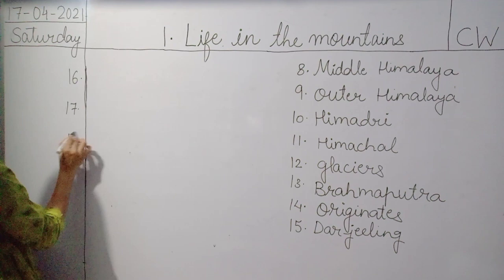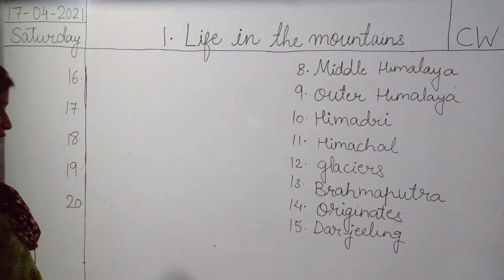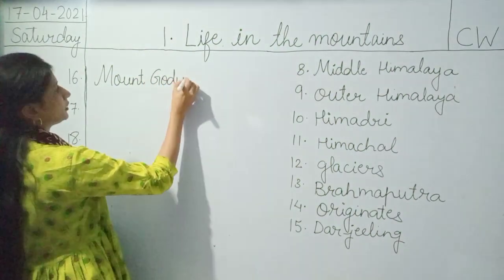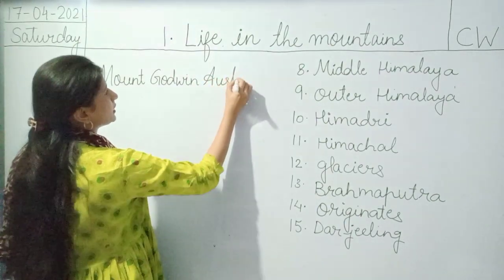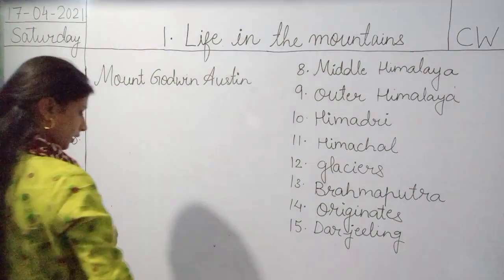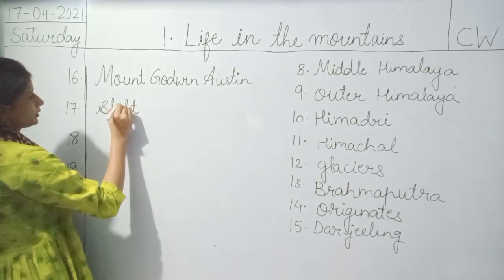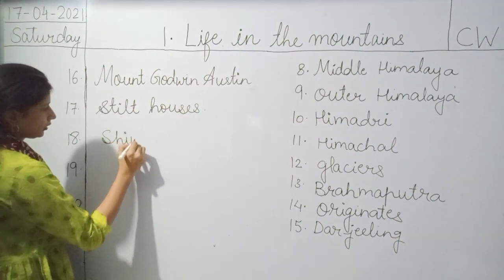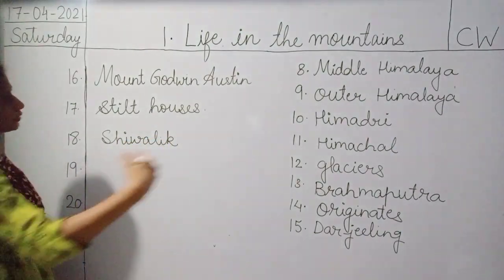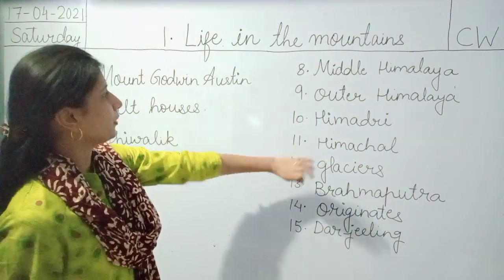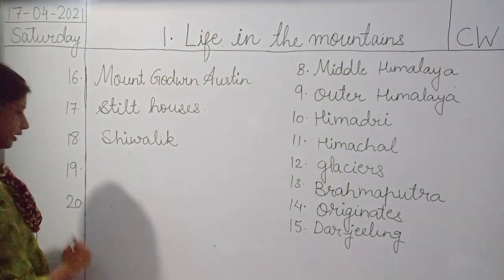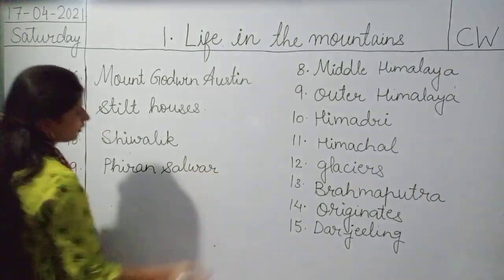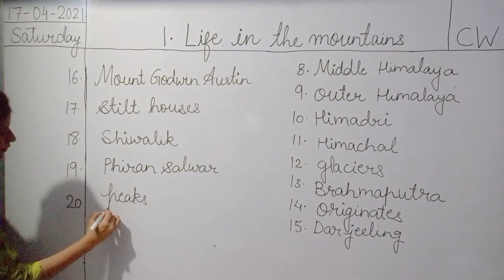The 16th one is Mount Godwin Austin — M-O-U-N-T G-O-D-W-I-N A-U-S-T-I-N. Then we have Stilt Houses — S-T-I-L-T H-O-U-S-E-S. Then Shivalik — S-H-I-V-A-L-I-K. The outer Himalaya is also called Shivalik, the middle Himalaya is called Himachal, and the greater Himalaya is called Himadri. Then we have Firan Salwar — P-H-I-R-A-N S-A-L-W-A-R. And then Peaks — P-E-A-K-S.